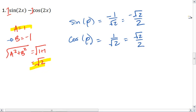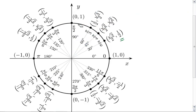We go to our unit circle. We find where cosine is positive root 2 over 2. There's two possibilities there. But we want sine to be negative root 2 over 2. This happens at either 315 degrees or 7 pi over 4 radians.